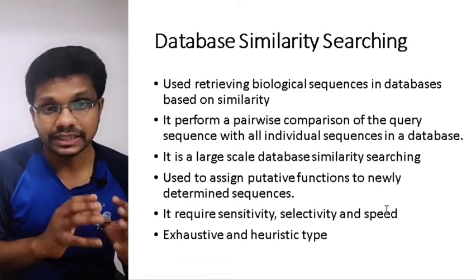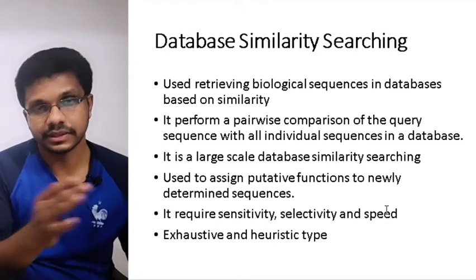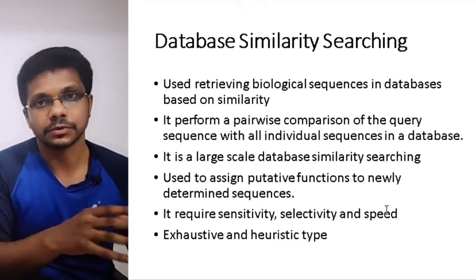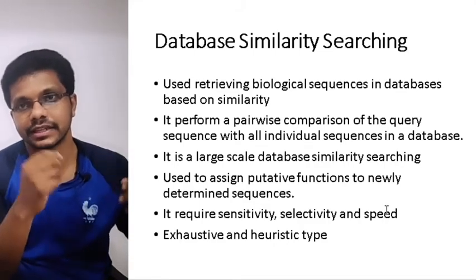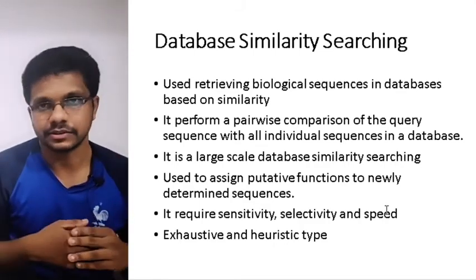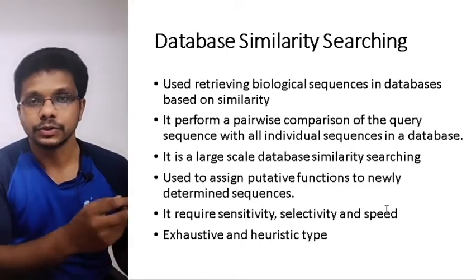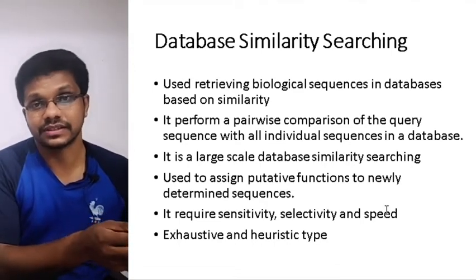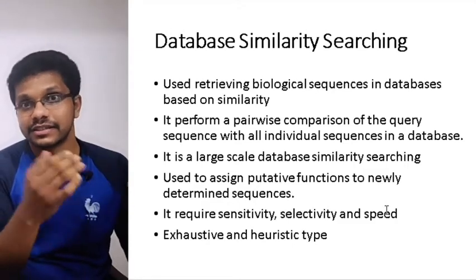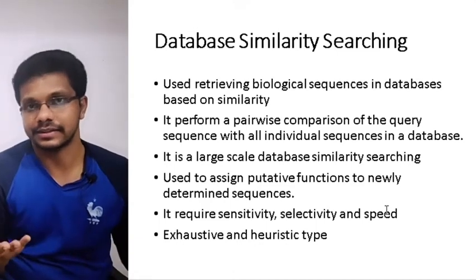Database similarity searching retrieves biological data from databases based on similarity. If you know a portion of a DNA sequence, you can use that sequence to retrieve data from databases. For example, if you find a new organism — say a new bacterium — you take the DNA out of it, sequence a portion of it, and submit those sequences into the database to find similar sequences, allowing you to identify the organism.